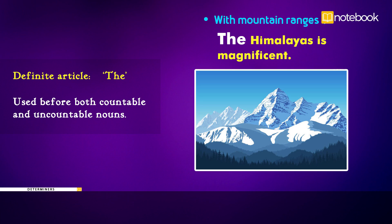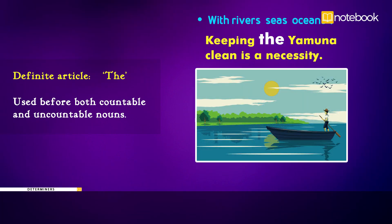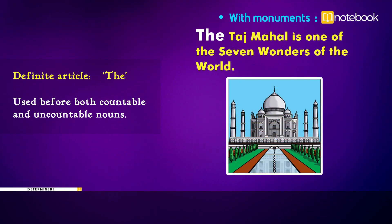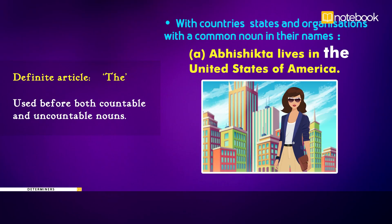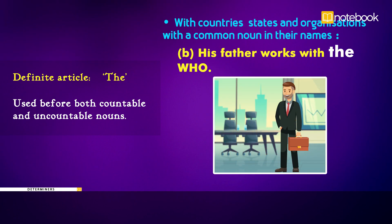Definite article: the. Used before both countable and uncountable nouns. With mountain ranges: the Himalayas is magnificent. With rivers, seas, oceans: keeping the Yamuna clean is a necessity. With monuments: the Taj Mahal is one of the seven wonders of the world. With names of planets or satellites: the moon is the only satellite of the earth. With countries, states, and organizations with a common noun in their names: Abhishekta lives in the United States of America. His father works with the WHO.